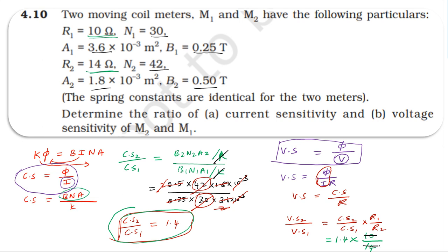This gives 1.4 times R1 by R2, equals 1.4 times 10 by 14, which equals 1. So the voltage sensitivity ratio is 1.